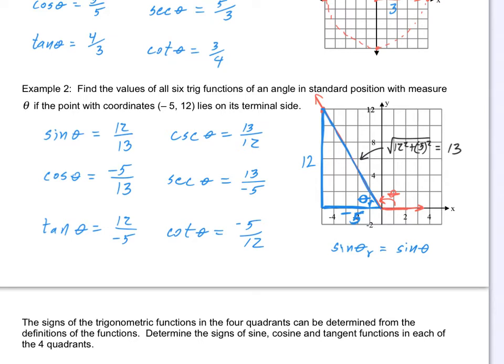So there are six trig function values. As long as you have x, y, and R, and as long as you have the correct sign — by sign I mean S-I-G-N, the positive or negative — you should be able to come up with these ratios.